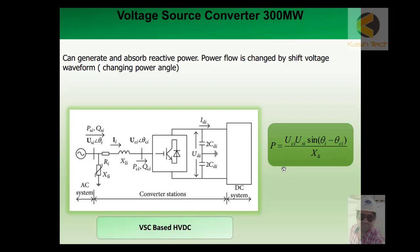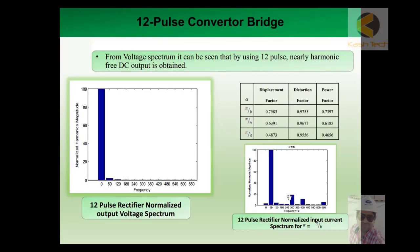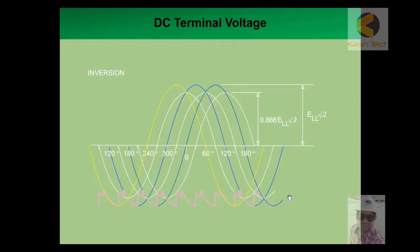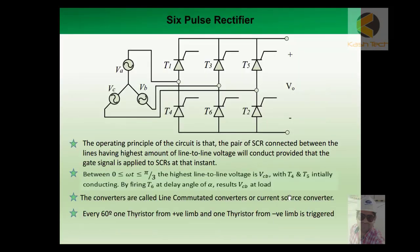Welcome. Let's continue our topic from the last lecture: voltage source converters. Previously, we discussed thyristors or converters that were current-based — these are called current source converters. With current source thyristors, the gate will not close even though the voltage is reversed. The gate remains open unless the current is completely stopped, even when voltage polarity is reversed. This is the key disadvantage of current source thyristors.